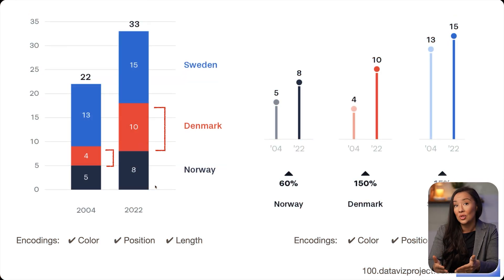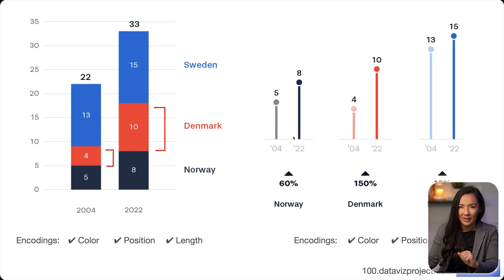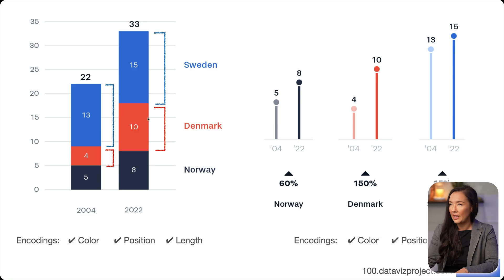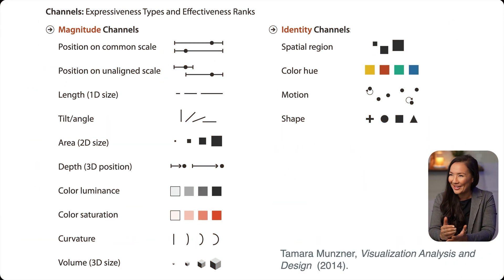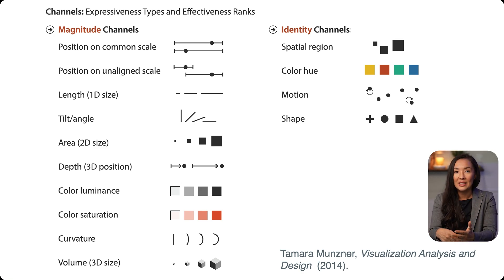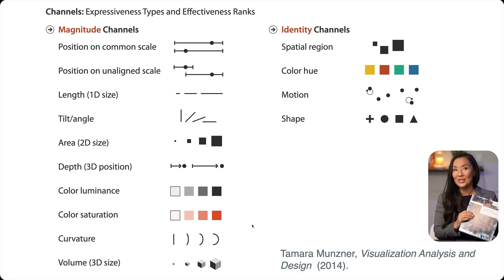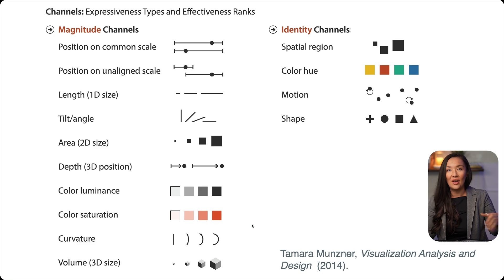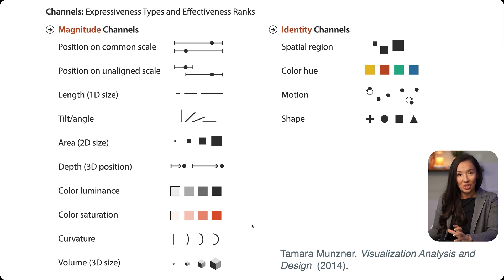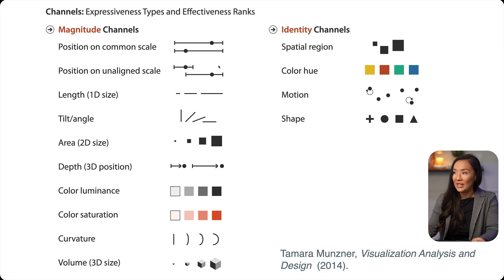I want to say that there are many different strategies for interpreting visualizations like these. Research finds that what we primarily do is, rather than looking at the length, we look at the position. The reason I'm emphasizing the difference between position and length is that the science of data visualization has explicitly broken down the different abilities of those encoding channels to communicate information effectively.